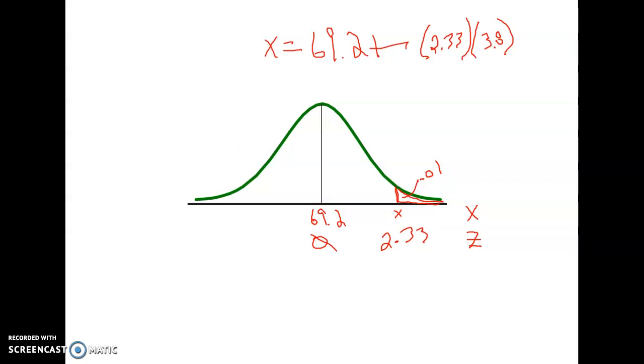And if you do that, let's see, we've got 2.33 times 3.8, that's 8.85. And we're going to add to that 69.2, and you should get 78. If we want to take it to the decimal place, it's about 78.1. So this value here would therefore be 78.1.